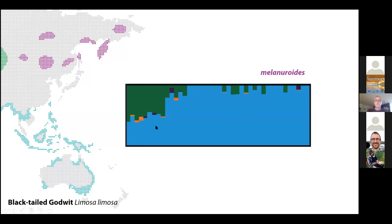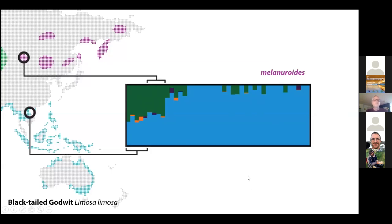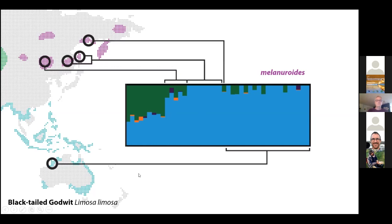Zooming into our flyway and melanuroides — in this one subspecies we have several genetic patterns, but the most striking is the difference between about ten individuals and the rest of my sample. These came from breeding samples from the Selenga River Delta near Lake Baikal, and non-breeding samples from the Vietnam coast, which look very similar, suggesting they're probably from the same breeding population.